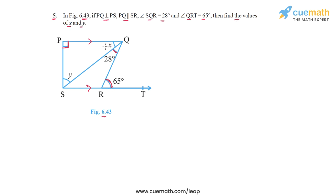Angle QRT is 65 degrees, then find the values of x and y. So x is this angle here and y is this angle here. We'll first find the value of x and the way we'll do that is we'll make use of the fact that this whole angle at Q, which is PQR, and this angle at R, which is QRT, these two angles are equal.